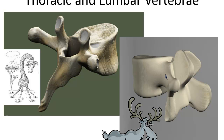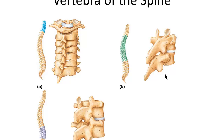A good way to remember the number of vertebrae in each segment: cervical vertebrae — 7, thoracic vertebrae — 12, lumbar vertebrae — 5. Think of a person who works at a bank: breakfast at 7 a.m. for seven cervical vertebrae, lunch at noon for 12 thoracic, and dinner at 5 for five lumbar vertebrae.